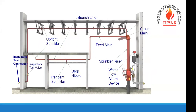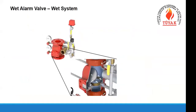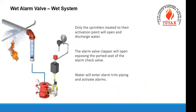This is a standard wet system. All the pipes are filled with water, and when the sprinkler operates, it discharges water immediately onto the fire. We use wet alarm valves here, which are called wet system alarm valves. These valves are typically a check valve that allows water flow in a single direction toward the sprinklers.